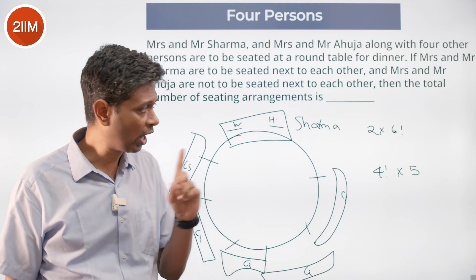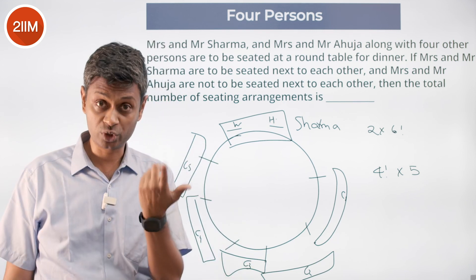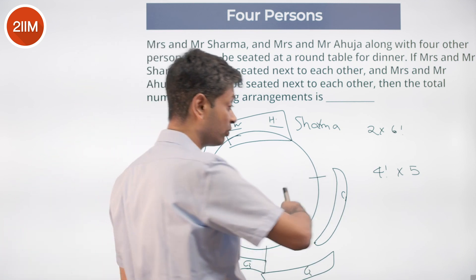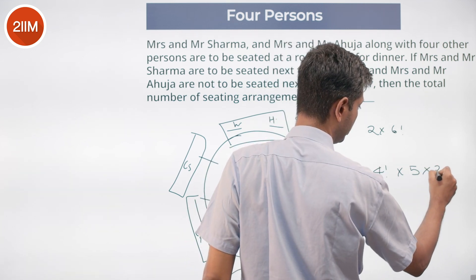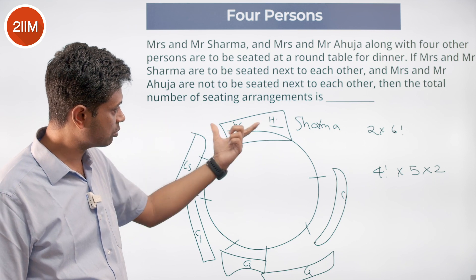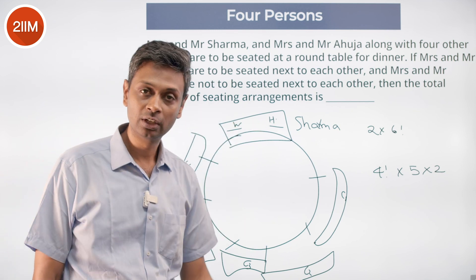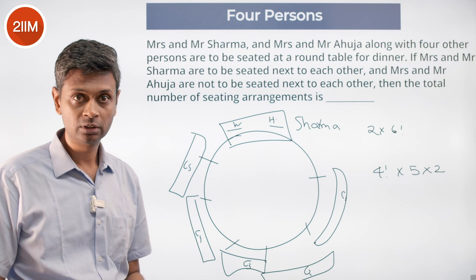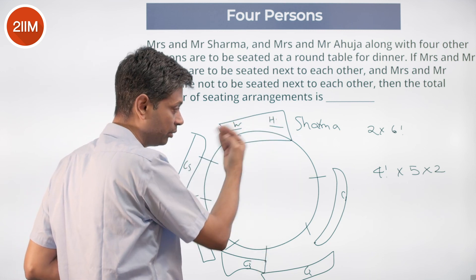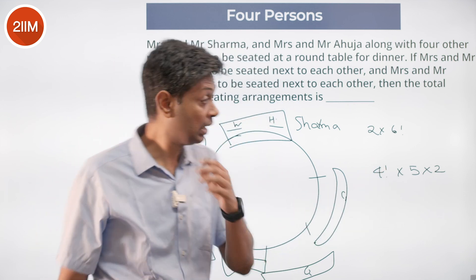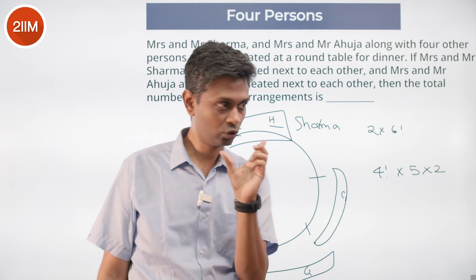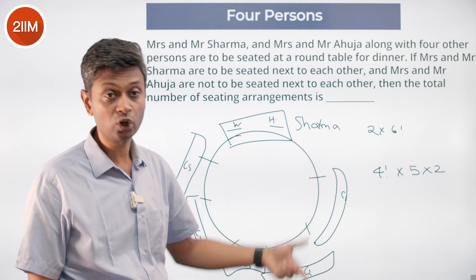One thing I overlooked initially: in each of those five combinations, the Ahujas could be husband-wife or wife-husband — so we multiply by 2. Therefore, the number of invalid arrangements (Ahujas together) is 4! × 5 × 2 = 240. Similarly, the Sharmas within their block can be husband-wife or wife-husband, giving a factor of 2 for the Sharma arrangement as well.